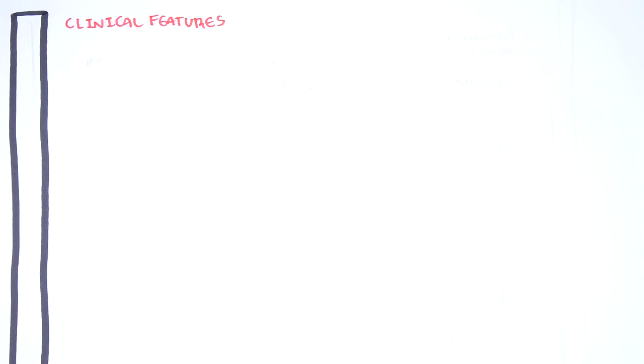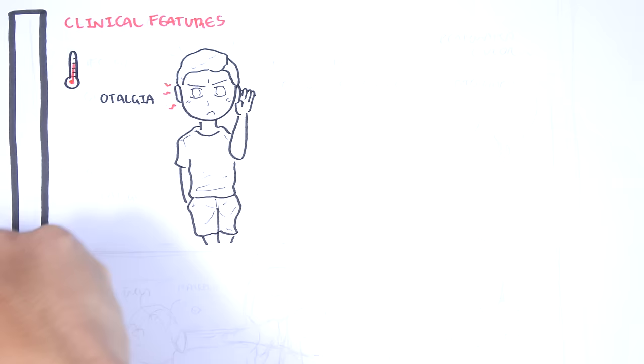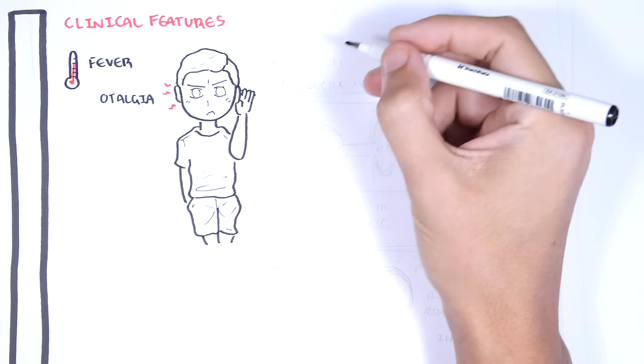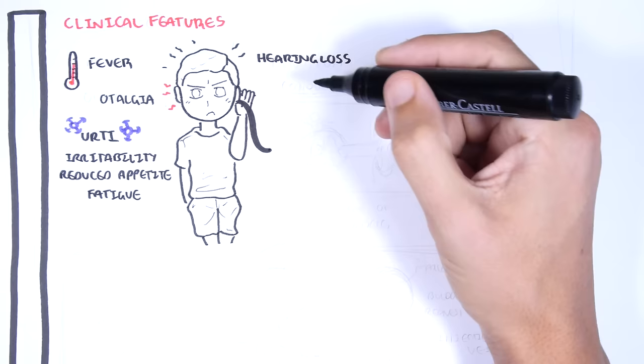Taking all the pathophysiology into context, acute otitis media classically presents with otalgia, ear pain, pyrexia, fevers, hearing loss, and otorrhea through the perforation of the tympanic membrane. Other symptoms in children include irritability, reduced appetite, upper respiratory tract infections, and fatigue.